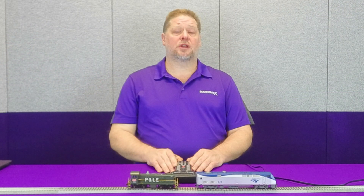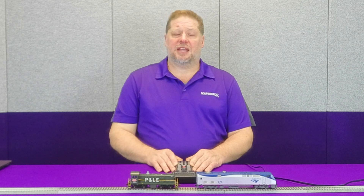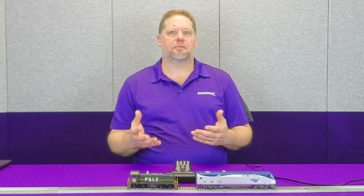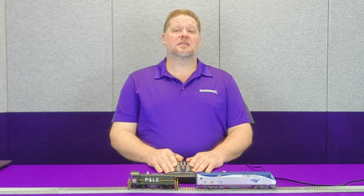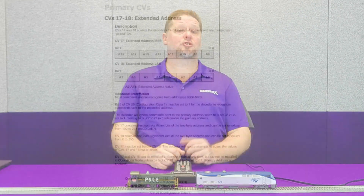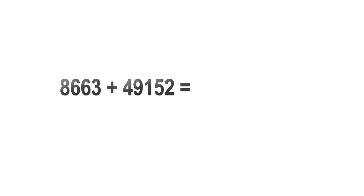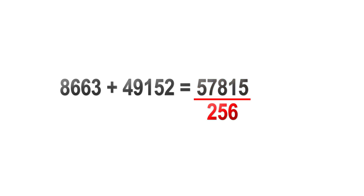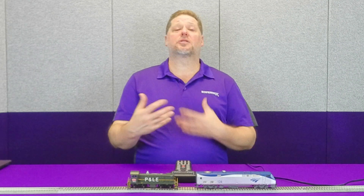The other type of addressing is extended — also known as four-digit or long address. Normally, there's an unnecessarily complicated mathematical algorithm to set this. The CVs for the long or extended address are stored in CV17 and CV18. To determine these values, you take your desired address, add 49,152 to it, then divide by 256. Your quotient goes into CV17, and your remainder goes into CV18. It's a little complicated, but it has to do with the way digital systems work.